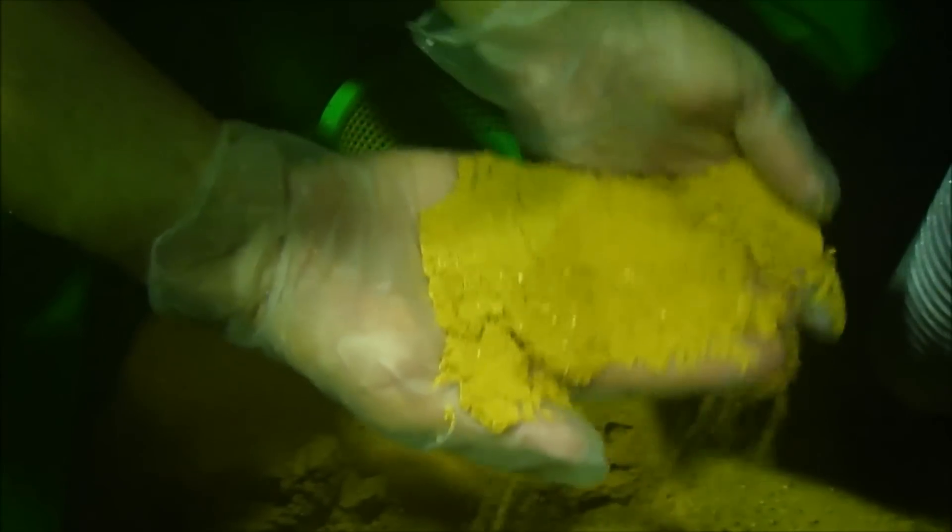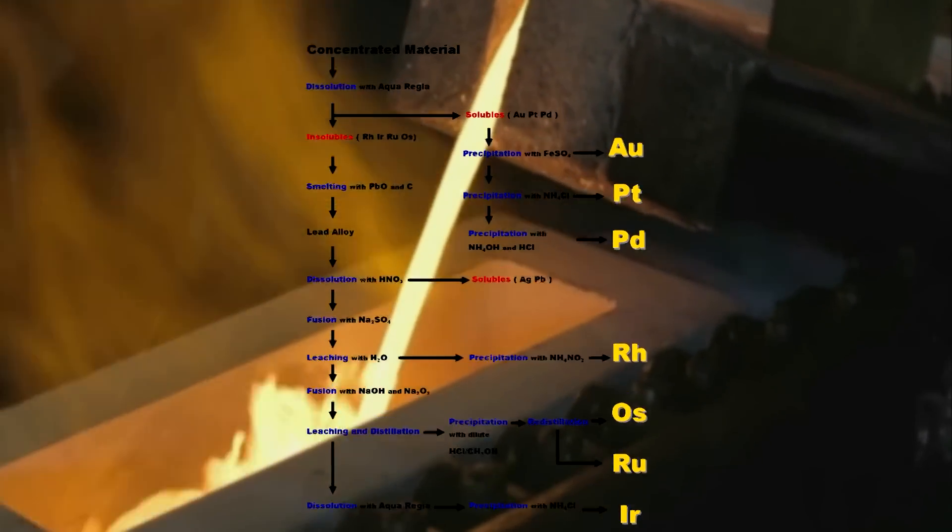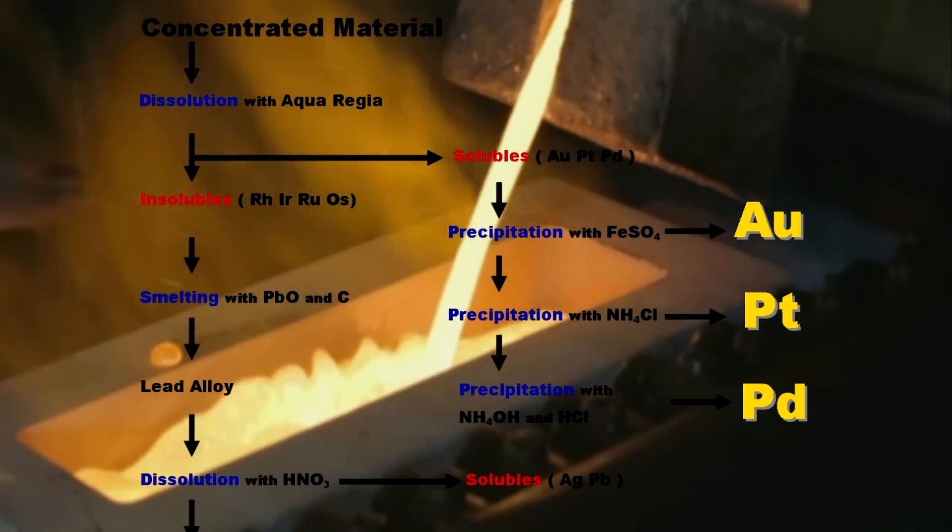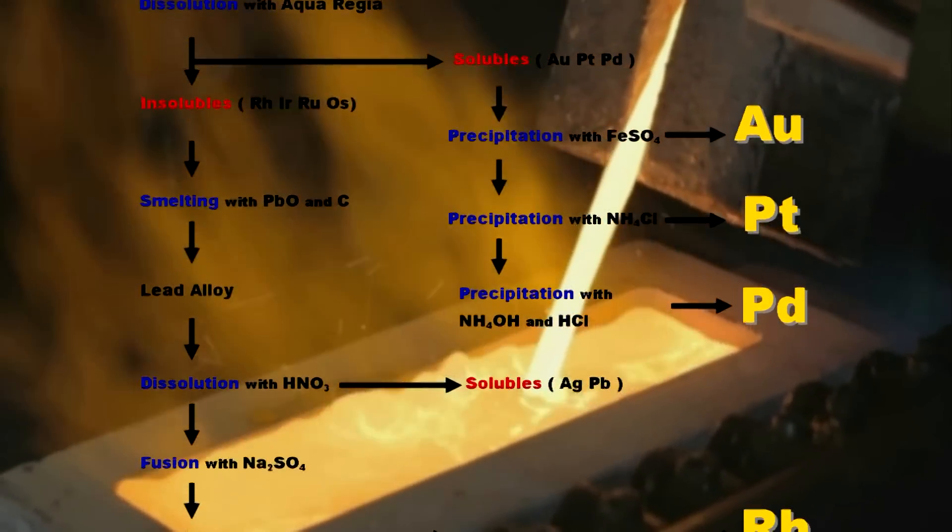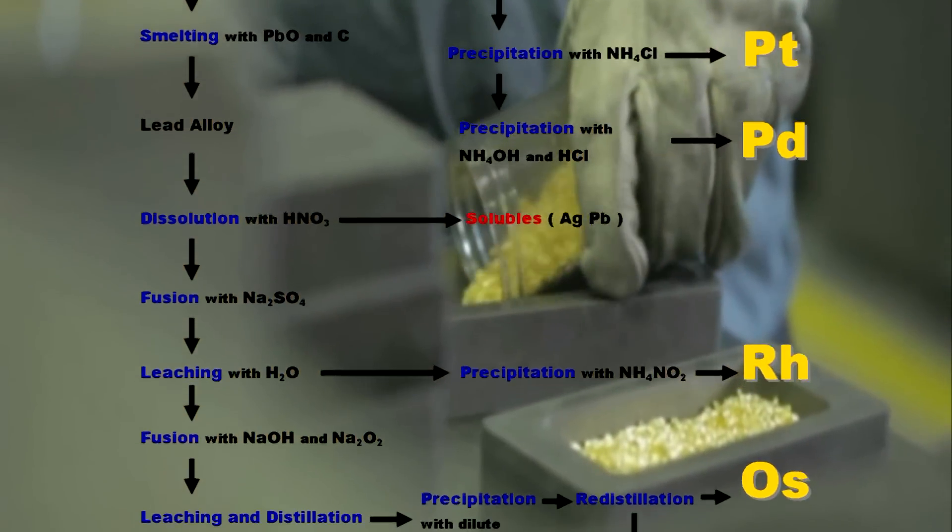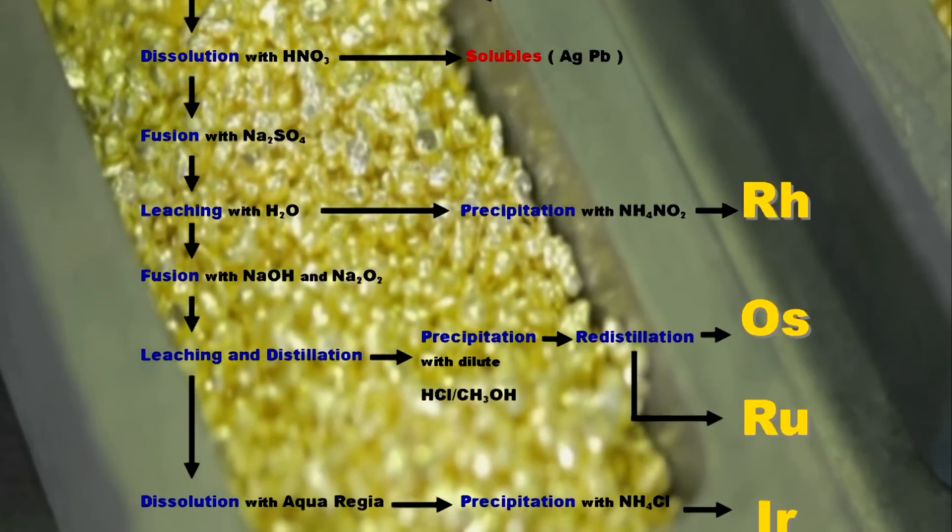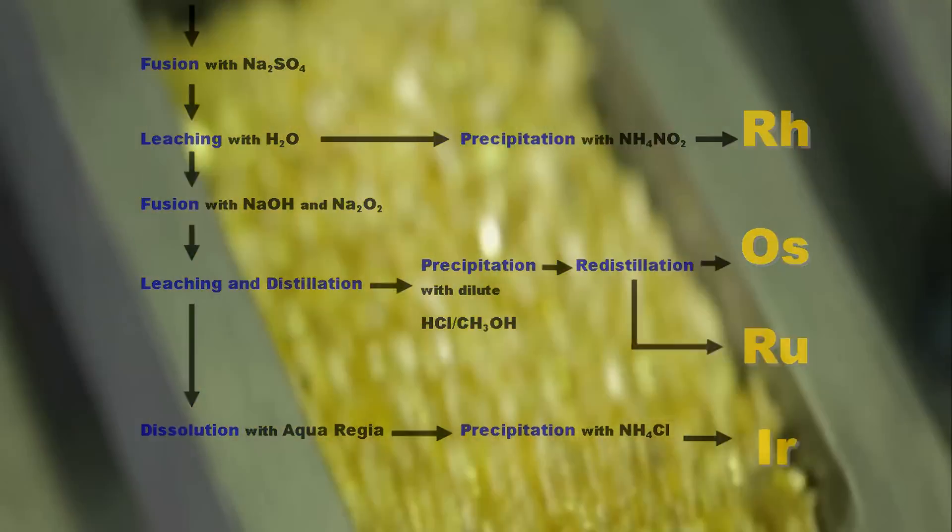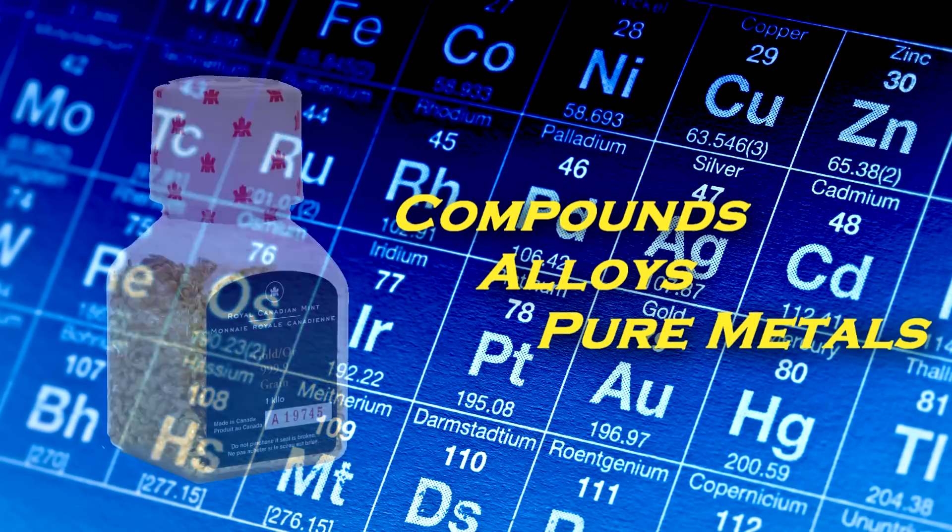Metal recovery will require a number of steps, depending on the precious metals involved and other base metals that may be carried along. Each process selectively reverses the chemistry to recover dissolved precious metals as compounds, alloys, or metals.